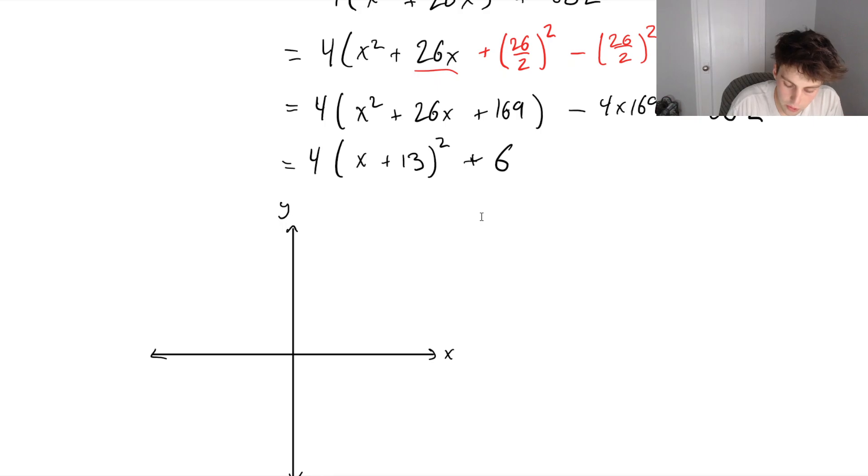We know when this first term here is equal to 0, we're going to be at a value of y equals 6. And that first term is equal to 0 when x is negative 13. So at negative 13, we're at a y value of 6. And we know that this is an upwards parabola. Its concavity is upwards, which means that at this value, it's going to look something like this. So we can see here our minimum value is going to be at x is equal to negative 13.